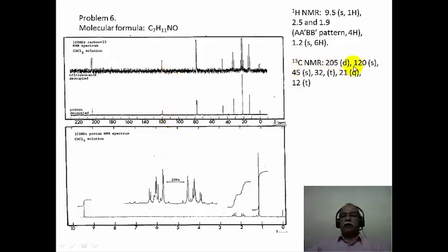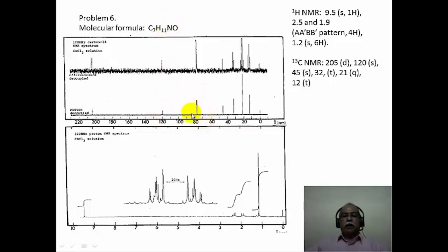Around 120 ppm there is a singlet in the carbon-13 spectrum. This cannot be aromatic because there are no aromatic hydrogens in the proton NMR, and it is unlikely to be olefinic since there are no olefinic protons either. The only other kind of carbon appearing in this region is a cyano carbon, so this molecule may contain a cyano functional group. The presence of nitrogen also supports this possibility. The two triplets in the off-resonance spectrum confirm two methylene groups, and a quartet near 45 ppm corresponds to the quaternary gem dimethyl carbon.